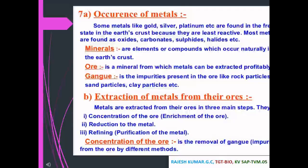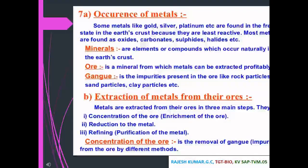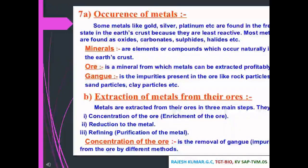Occurrence of metals: some metals like gold, silver, and platinum are found in the free state in the earth's crust because they are least reactive. Most metals are found as oxides, carbonates, sulphides, halides, etc. Minerals are elements or compounds which occur naturally inside the earth's crust. An ore is a mineral from which metals can be extracted profitably. Gangue is the impurities present in the ore, such as rock particles, sand particles, and clay particles.